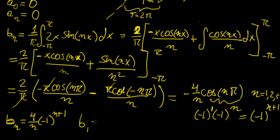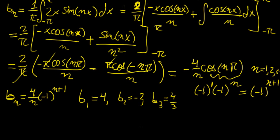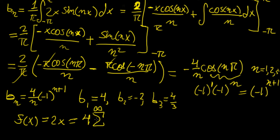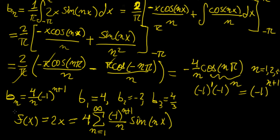Writing out the terms: b₁ = 4, b₂ = -2, b₃ = 4/3, and so on. In the end, we can write the Fourier series expansion for this non-periodic function as f(x) = 2x = 4 · Σ (n=1 to ∞) [(-1)^(n+1) / n] · sin(nx). This is our final result.